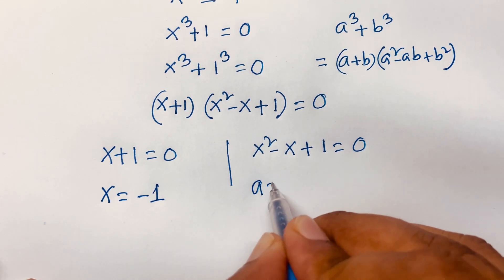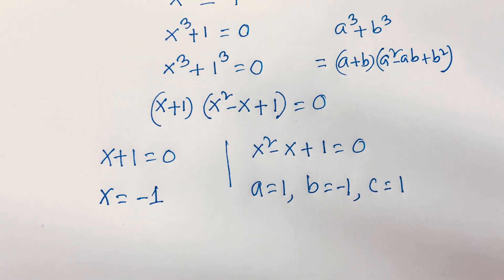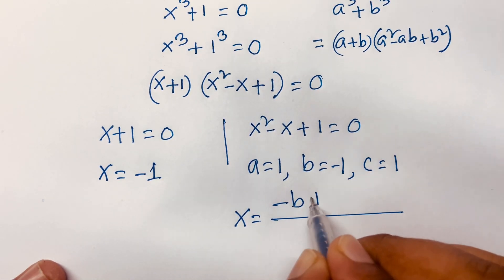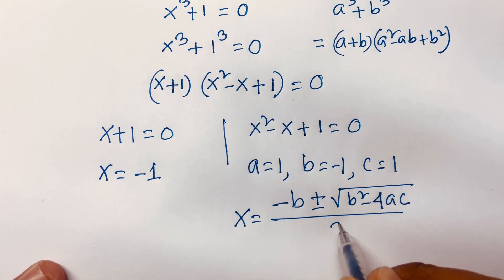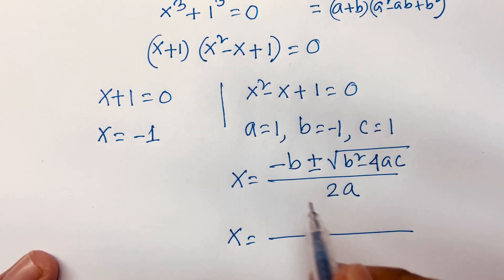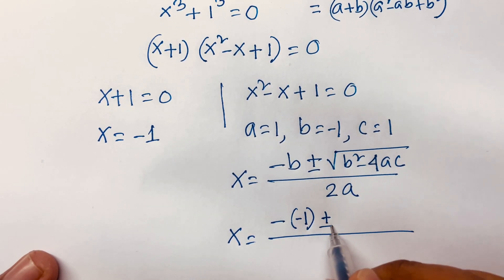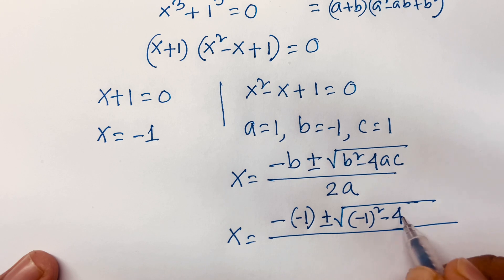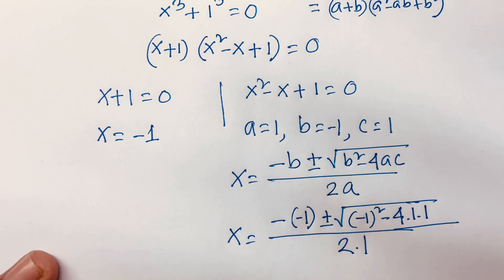For the quadratic x² minus x plus 1 equals 0, I can say a is equal to 1, b is equal to minus 1, and c is equal to 1. Then x is equal to minus b plus or minus square root of b² minus 4ac, all over 2a. Putting in the values: minus b is minus of minus 1, so plus, then b² is (minus 1)² and 4ac is 4 times 1 times 1, all over 2 times 1.